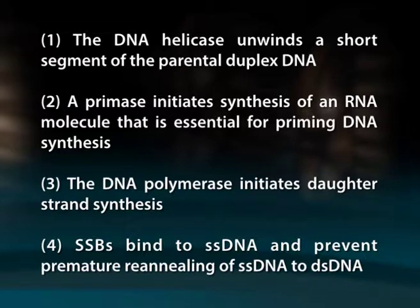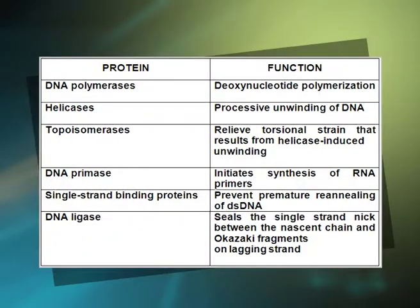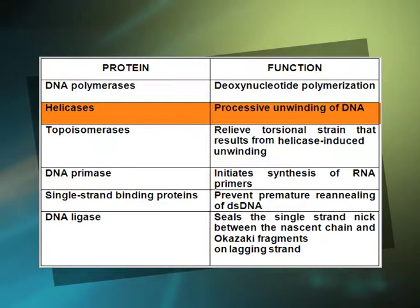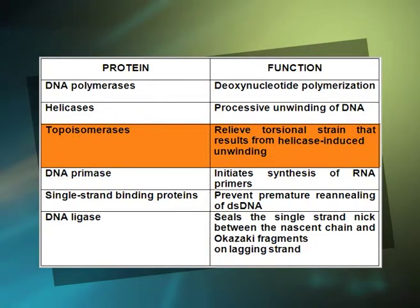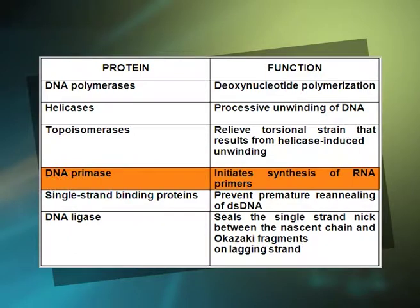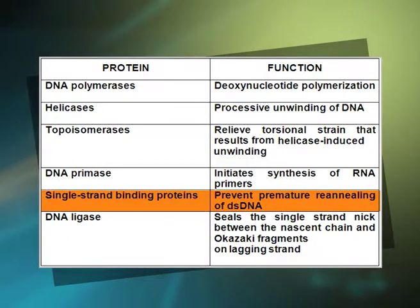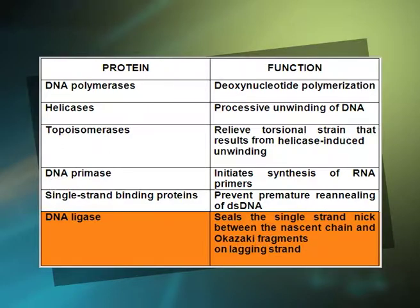The key enzymes and their functions are: DNA polymerases for deoxynucleotide polymerization; helicases for processive unwinding of DNA; topoisomerases to relieve torsional strain from helicase-induced unwinding; DNA primase to initiate synthesis of RNA primers; single-stranded binding proteins to prevent premature annealing of double-stranded DNA; and DNA ligase to seal the single-strand nick between the nascent chain and Okazaki fragments on the lagging strand.